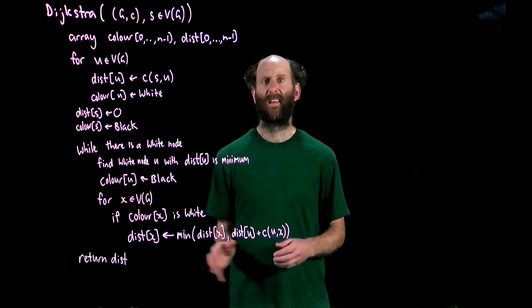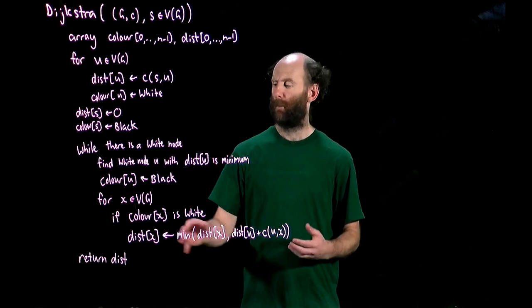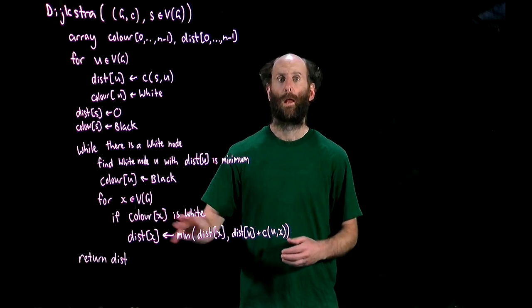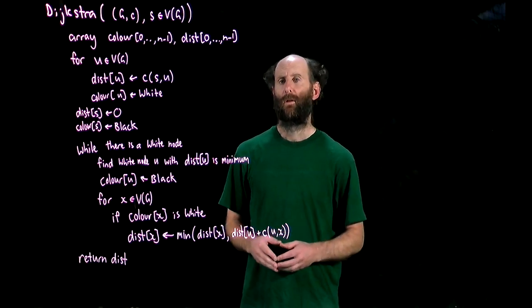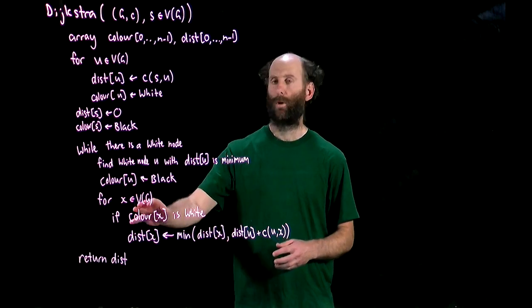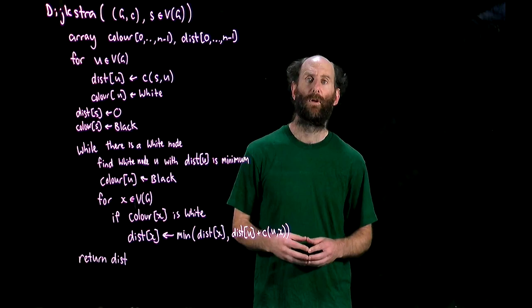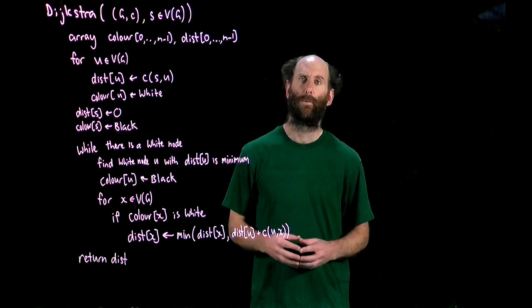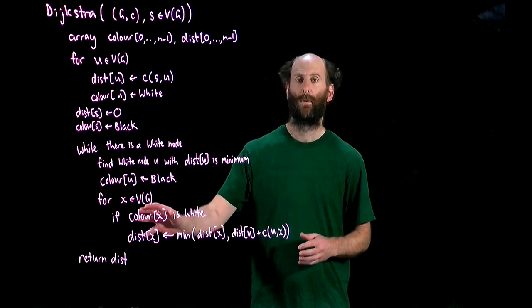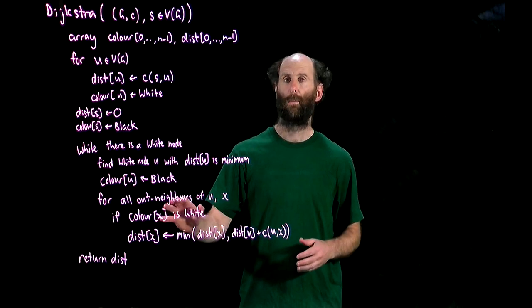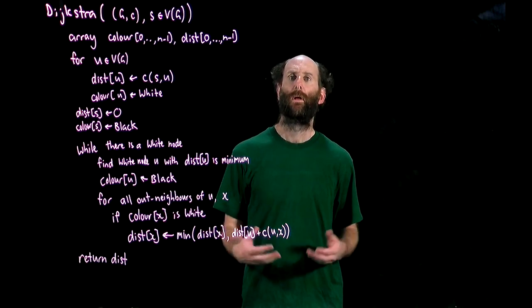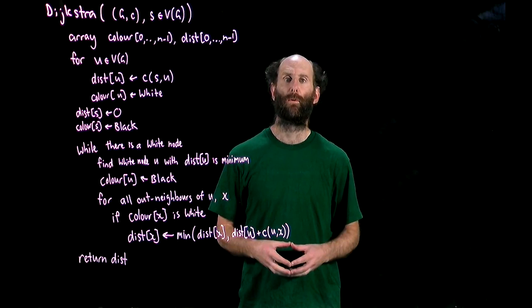We can immediately see that only the out neighbors of U will ever get updated in this loop. So we don't have to iterate over all nodes V in G, we only need to look at the out neighbors of U which are easily accessible using adjacency lists. So let's change that. Okay we've updated that so let's work an example and see what's going on.